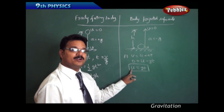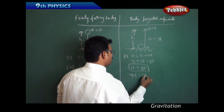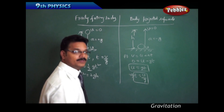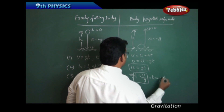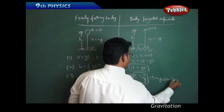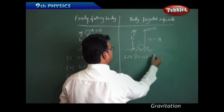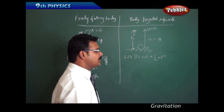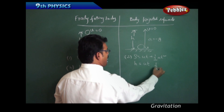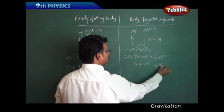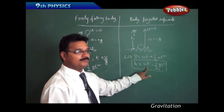You can find the initial velocity of the projected body if you know the time. Rearranging gives T = U/G, which is called time of ascent. For the second equation S = UT + ½AT², the distance travelled is height H. With A = -G, we get H = UT - ½GT². Using this formula you can find how much height is travelled if you know the time period of travel.